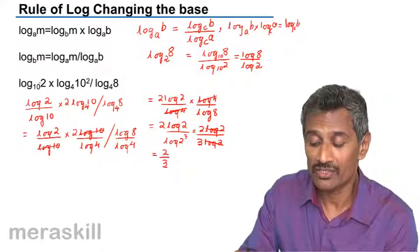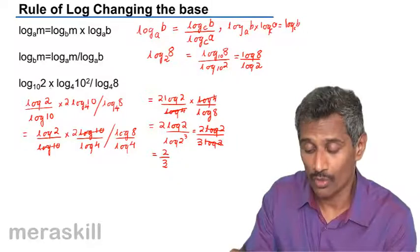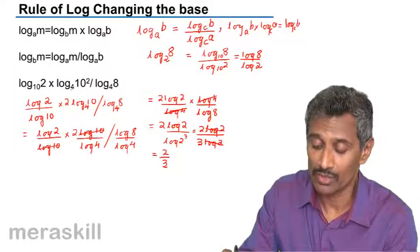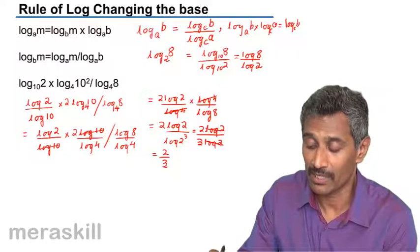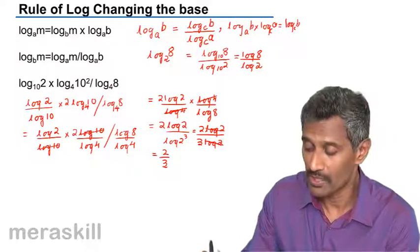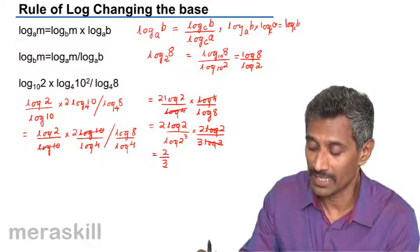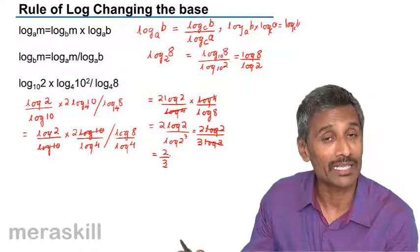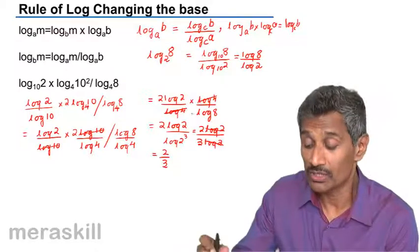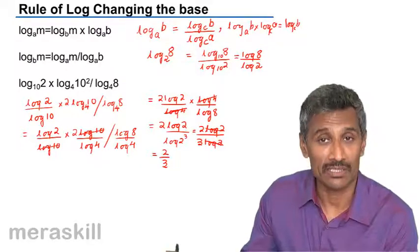So this is how we can change the base. Log 2 by log 10, and here we can write it as 2 log 10 upon log 4 divided by log 8 to the base 4. This 8 can be written as 2 cube and hence we get this as 2 by 3. So this is the concept of changing the base.